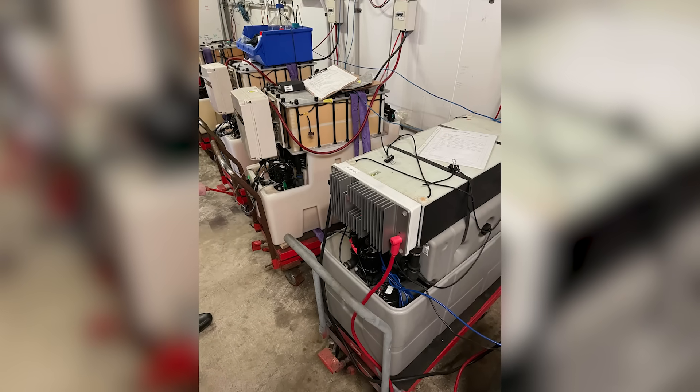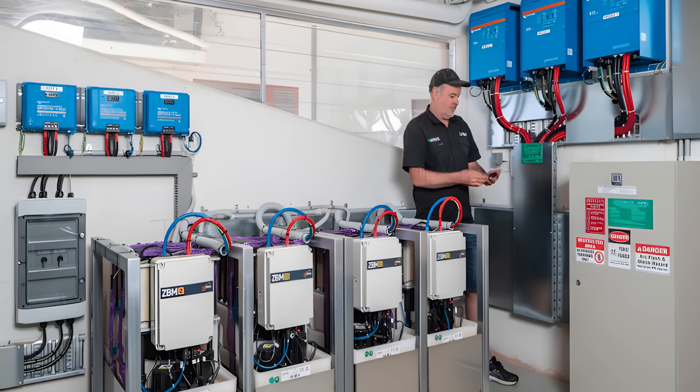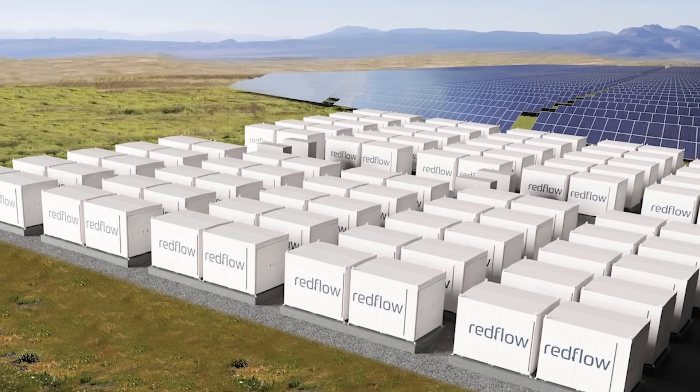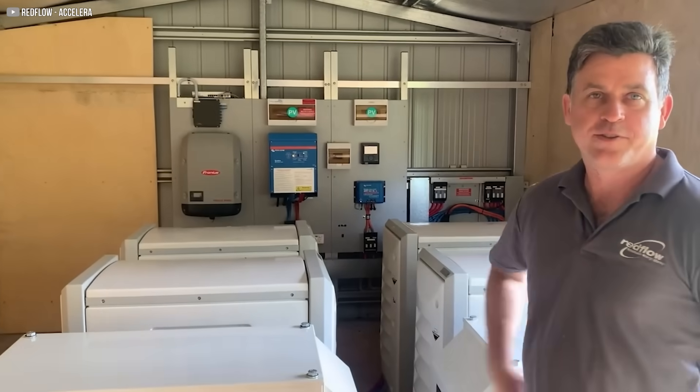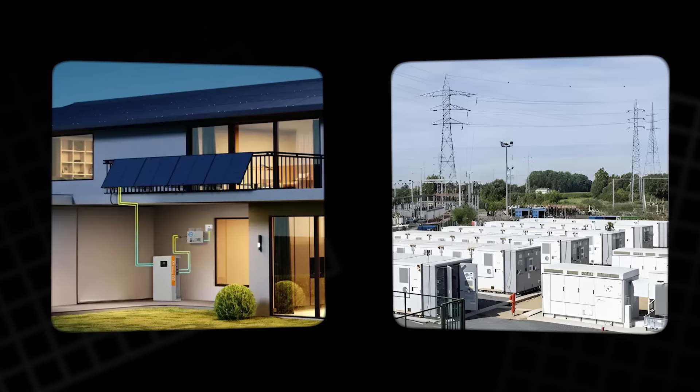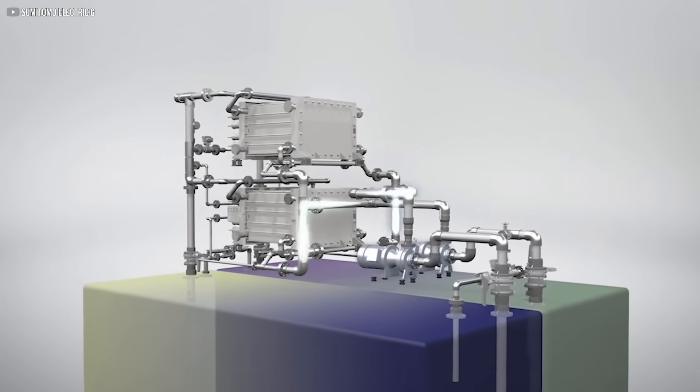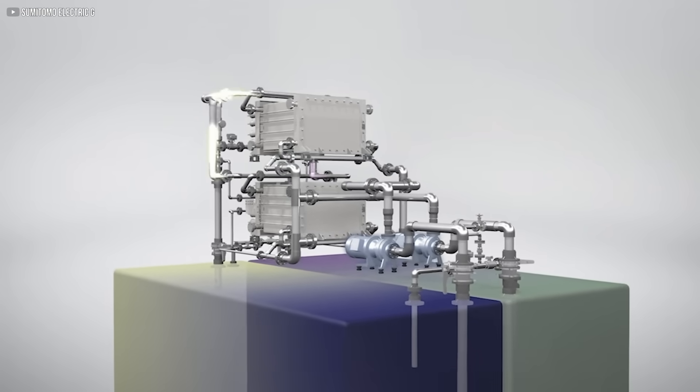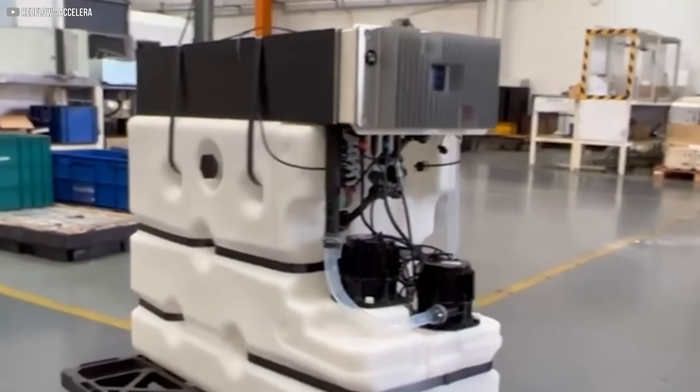Redflow leaned into what flow batteries do best. Resilience and modularity. Their units are built for harsh remote environments. Places where lithium would overheat or fail. Telecom stations in the Australian Outback. Off-grid homes. Industrial microgrids. Each battery stores 10 kilowatt hours and is designed for full daily cycling. That means it can be completely drained and recharged every single day without damage.